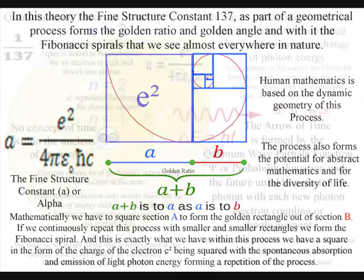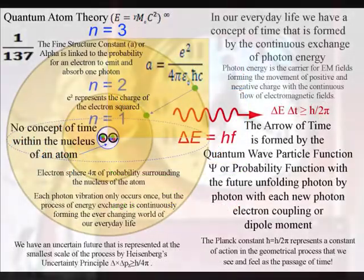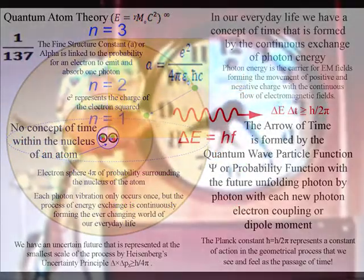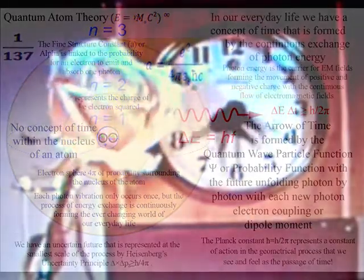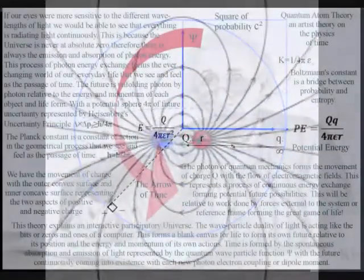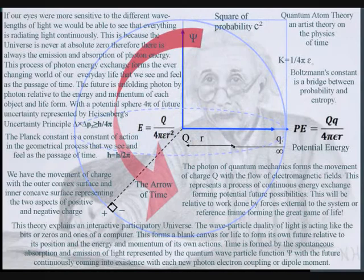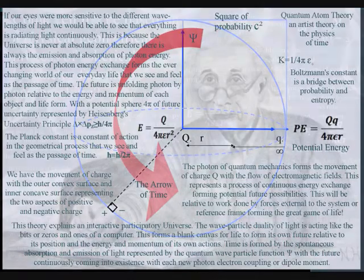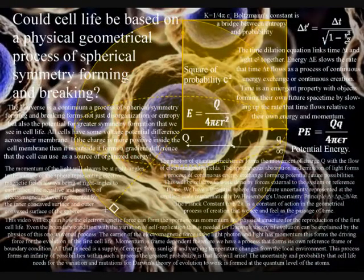Each photon vibration only occurs once, but the process of energy exchange is continuously forming the movement of positive and negative charge with the continuous flow of electromagnetic fields in three-dimensional space. This dynamic geometry forms the driving force for the great complexity and diversity of cell life.